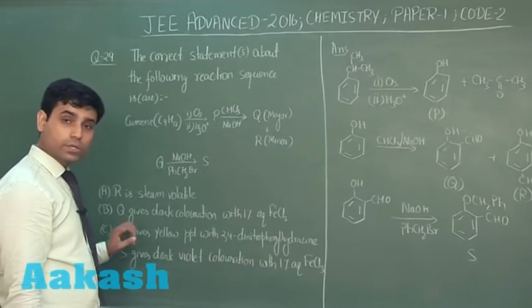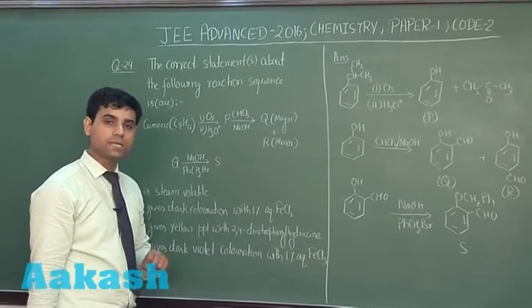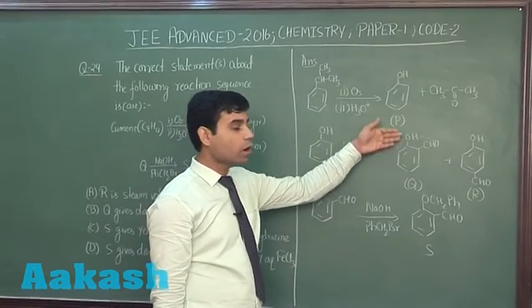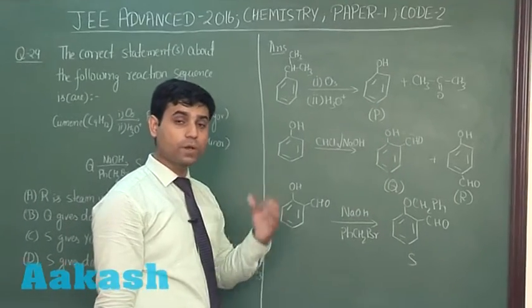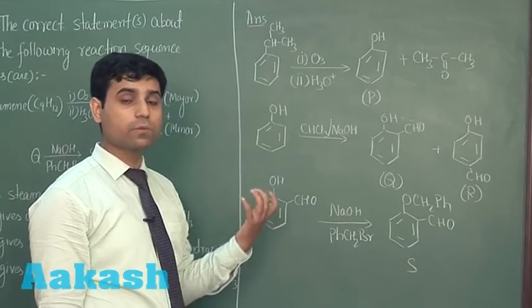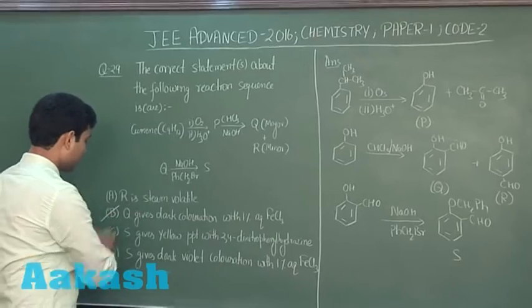Second option says Q gives dark coloration with 1% aqueous FeCl3. We have this Q. In Q, we have phenolic OH. Phenolic OH gives us dark violet coloration with 1% FeCl3. This is true statement. Option B is correct.